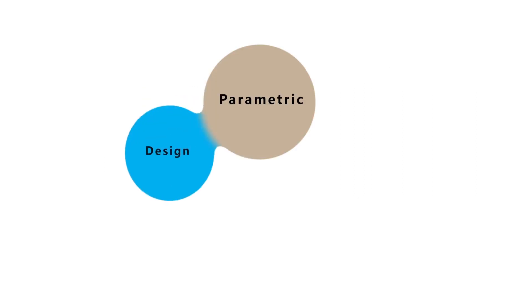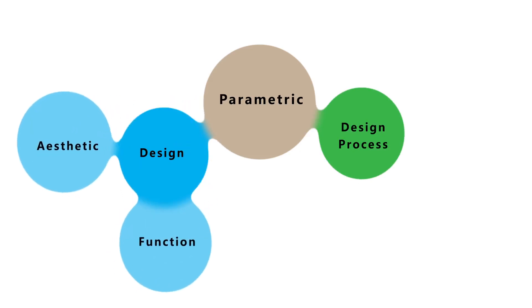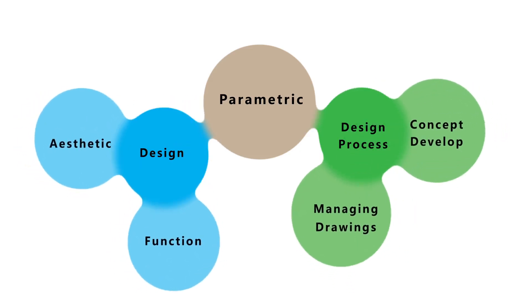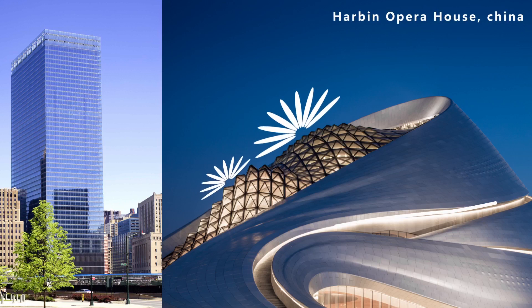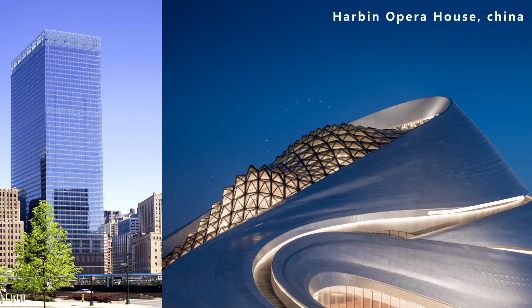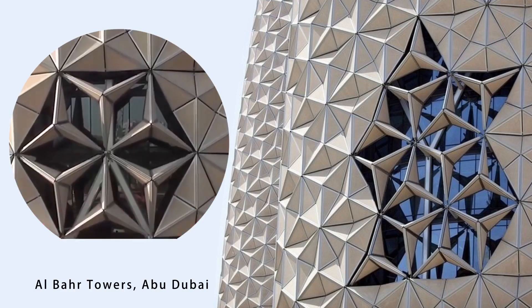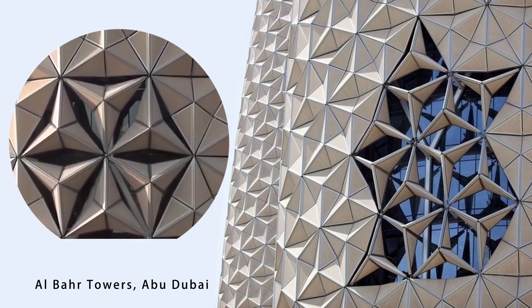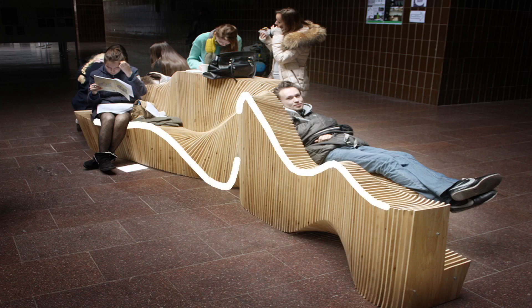The advantages for architects using parametric design include both aesthetic and functional benefits. For example, a Norman Foster glass building uses parametric design to produce different reflections, achieving aesthetic and functional lighting. In the building, direct sunlight intensity is automatically controlled. A parametric bench can offer different styles of relaxing while also being aesthetically good.